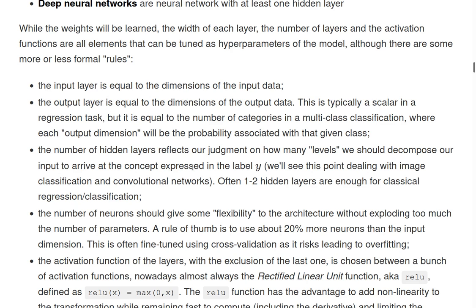The number of hidden layers, instead, is something that reflects our judgment on how many levels we should decompose our input to arrive to the concept expressed in our labels. And we'll see this point in particular when we deal with images, but often one, two hidden layers for classical regression or classical classifications are enough.